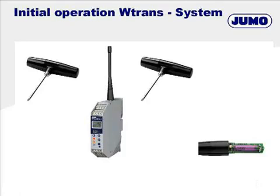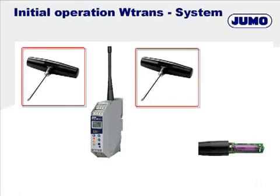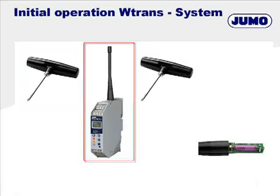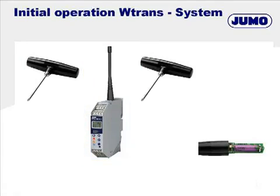We act on the following assumption: two wireless transmitters are equipped with a battery and measure the temperature at a rotating part of the system. The wireless transmitters are within the operating distance of a receiver, and the antenna is mounted to the receiver.